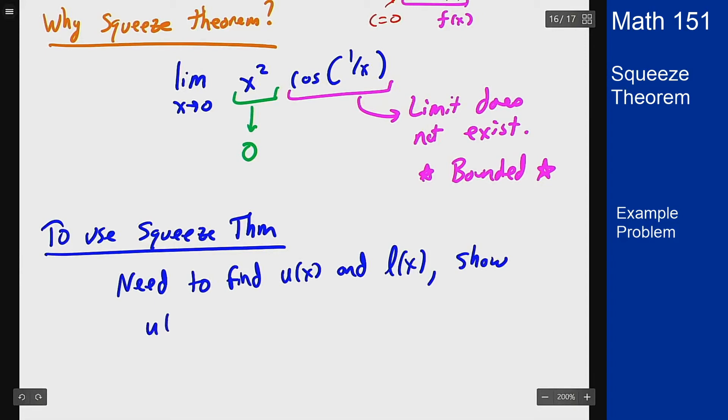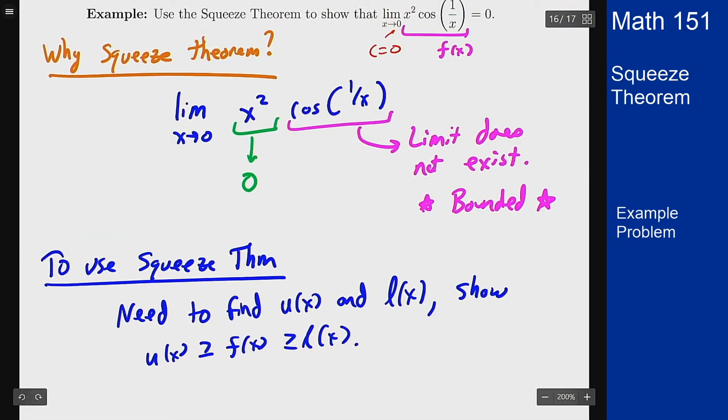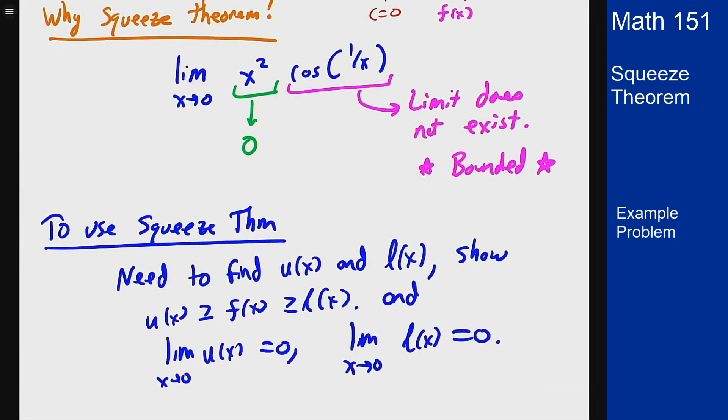They just show that u of x is bigger than f is bigger than l, and that u and l have the same limit, namely that of 0, because I'm told in the problem statement it should go to 0 at 0. How do we do that?